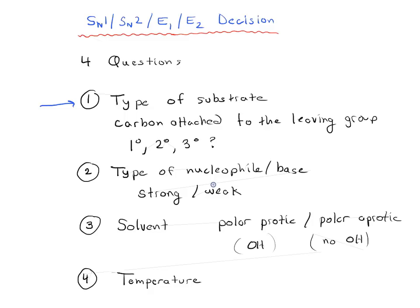We said that basically if it's primary, you want to look mostly for an SN2 type reaction. If it's tertiary, you want to rule out SN2. In this video, we're going to talk mostly not about the type of substrate. We're going to assume that you've already asked this question.